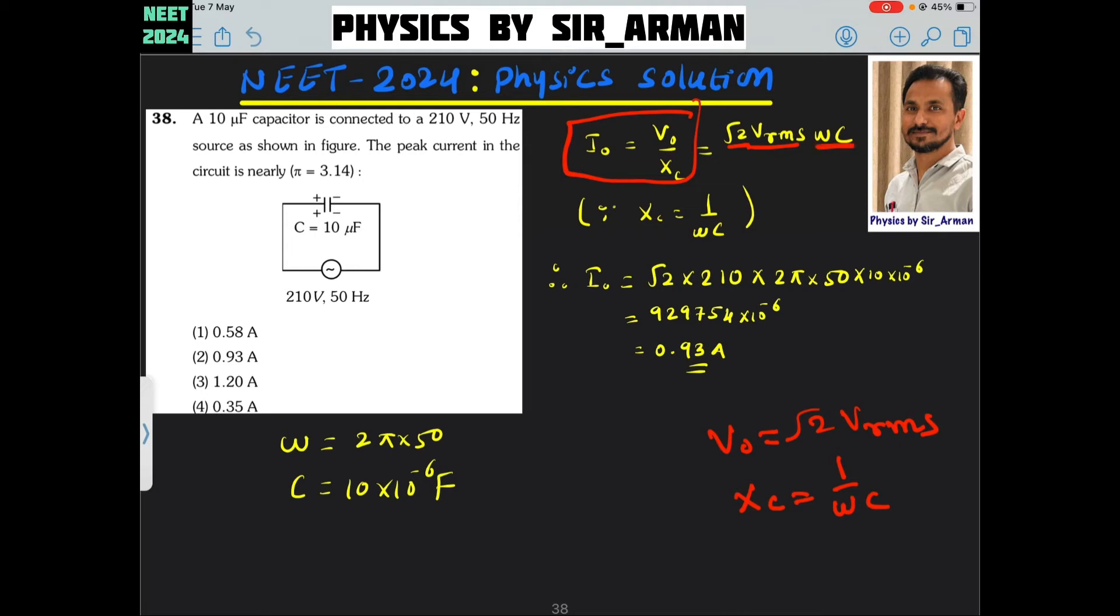If you put here 1 upon omega C, it will go up. So the peak current will be... peak means amplitude, the highest current. So it is root 2.